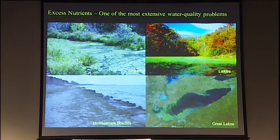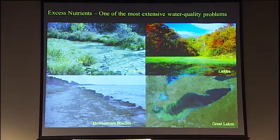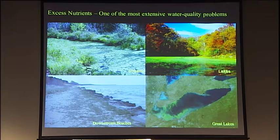Now most of the stuff you've heard here is dealing with nitrogen. The problem really in the United States, at least in the central part of the United States, is phosphorus. I'll primarily be talking about phosphorus, but it really applies to both of those.